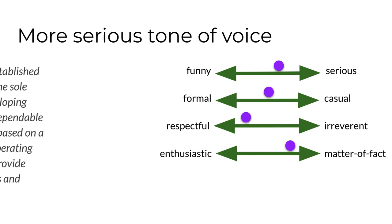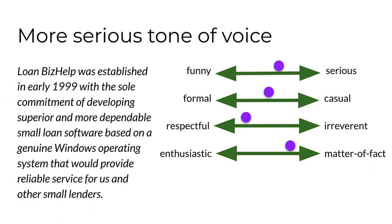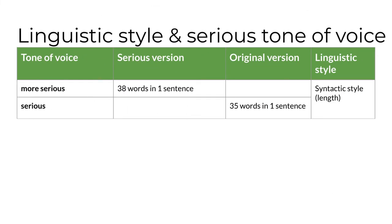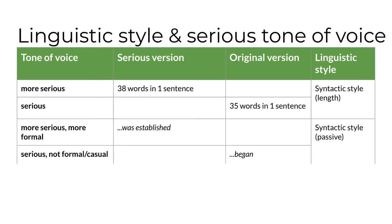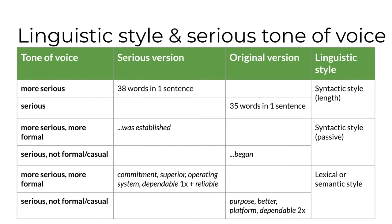I also rewrote the message with a more serious tone. The original version was already on the serious side of the continuum, but here's a version that I think is even more serious. I think it's also moved the message toward the formal side of the continuum. The syntactic style of the more serious version is about the same sentence length as the original, but it uses passive structure — 'was established.' The serious version also uses lexical or semantic variation to create more serious and formal vocabulary: 'commitment' instead of 'purpose,' 'superior' instead of 'better,' 'operating system' instead of 'platform.' And the serious version uses 'reliable' as a synonym for 'dependable' instead of repeating the same word.